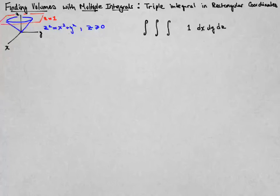One way to do that is a triple integral in rectangular coordinates, and we'd need to integrate the function 1. I've chosen an order of integration here, rather arbitrarily, dx, dy, and then dz last.